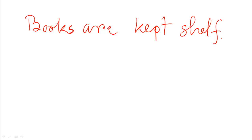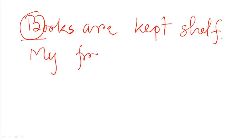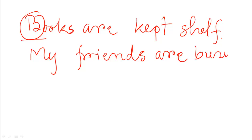Here we see the letter 'B' at the beginning of a sentence — it is capital. Another example: 'My friends are busy,' where 'M' at the beginning of the sentence is capital.